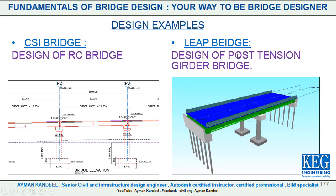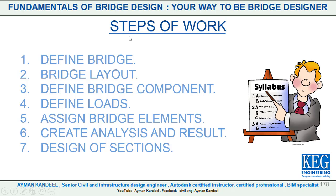Let's start creating our example on CSI Bridge. For the first one we will go for an RC bridge — reinforced concrete girder type bridge. The steps of work are: step one, define your bridge; step two, define the bridge layout; step three, define bridge components; step four, define loads; step five, assign all items to the bridge element; step six, create analysis and results; and step seven, design of sections.